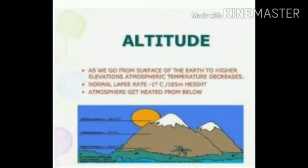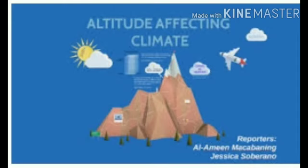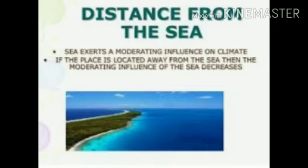There are two reasons for the decrease of temperature with altitude. One is that the atmosphere gets heated from below upwards by terrestrial radiation. The lower layers of the atmosphere are denser and they contain water vapour, dust, and other particles which absorb heat. At higher levels, the air is rarefied and the absence of water vapour and dust particles permits the escape of radiation back to space. Therefore, the air is cooler in mountainous regions.